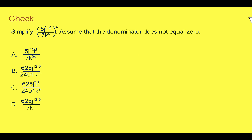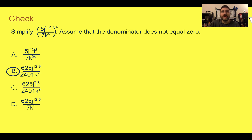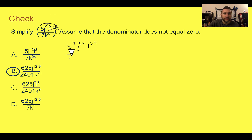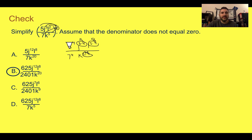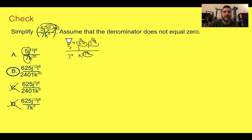Check your understanding: simplify the expression and choose the best answer. Pause the video now and complete the check. The answer is b. We take the 4th power and distribute all exponents: on the top we get 5 to the 4th, j to the 3 times 4 which is j to the 12th, and l to the 2 times 4 which is l to the 8th. On the bottom, we get 7 to the 4th and k to the 5 times 4 which is k to the 20th. The answers with exponents 12, 8, and 20 rule out c and d. Simplifying the numbers: 5 to the 4th is 625 and 7 to the 4th is 2,401, confirming answer b.